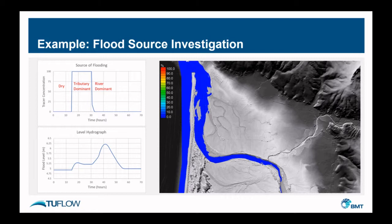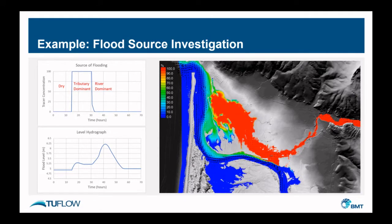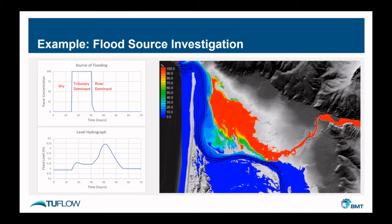And then around 30 or 31 hours the concentration drops right down to zero, demonstrating that river inundation has then occurred in the floodplain at this site. The hydrograph at the same location is shown below it. As you can see there's a smaller peak for the tributary and then a large peak when the river flooding kicks in. In the animation you can see the red showing the water coming from the tributary, blue is water originating from the river — the river bank breaks and then the floodplain fills up with the river water.